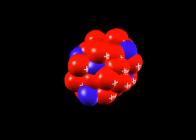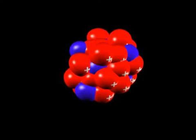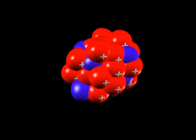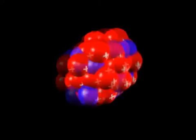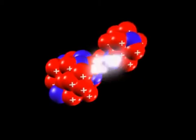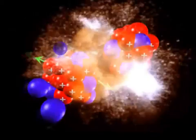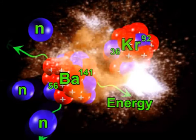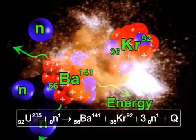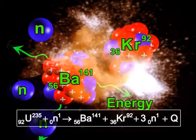The nucleus of U-236 gets elongated, oscillates fast, and finally disintegrates into barium-56-141 and krypton-36-92 with the emission of three neutrons along with lots of energy.